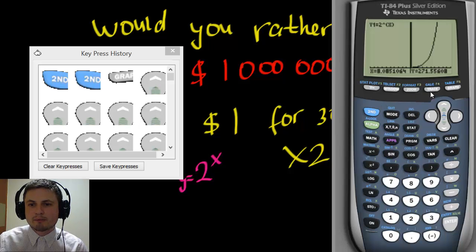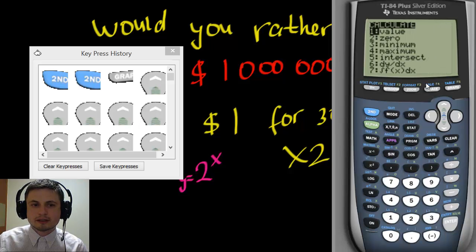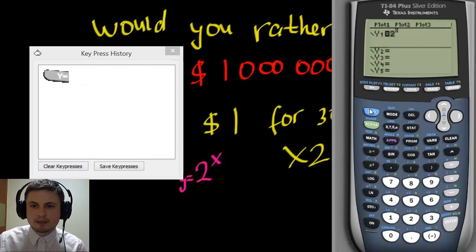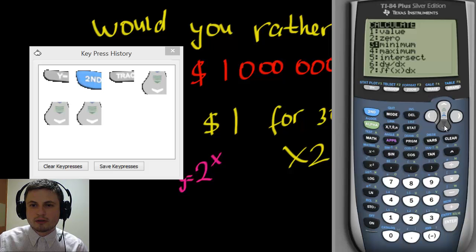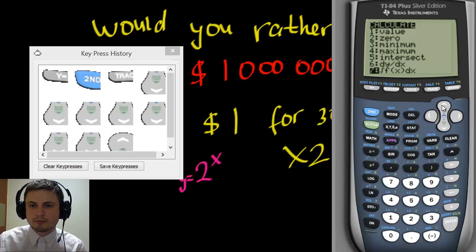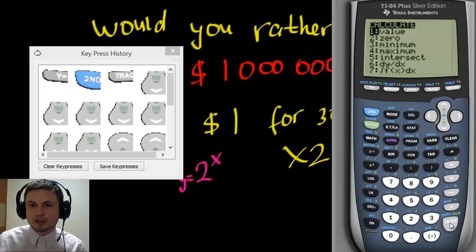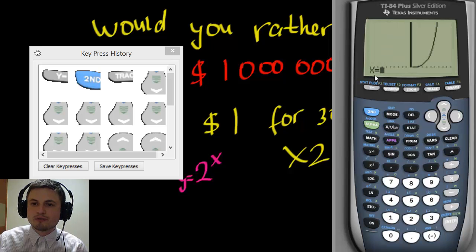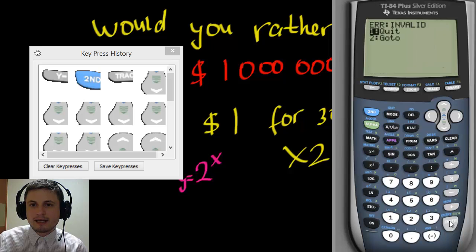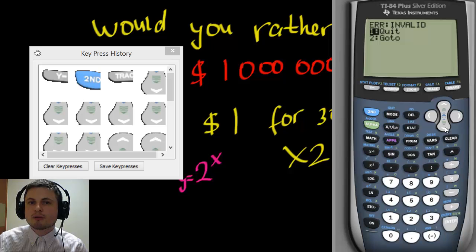Now let's use the CALC function, which is Second then Trace. This gives you options including Value, which finds the y value at a specific x. Click Value, press Enter, and type in x equals 30 for 30 days. But it gives an invalid error — that's because our window is still too small.